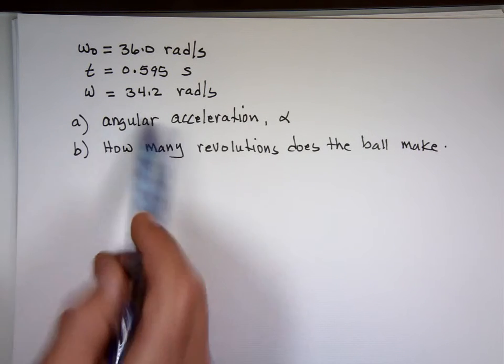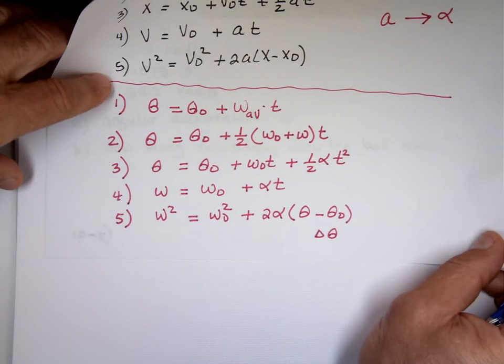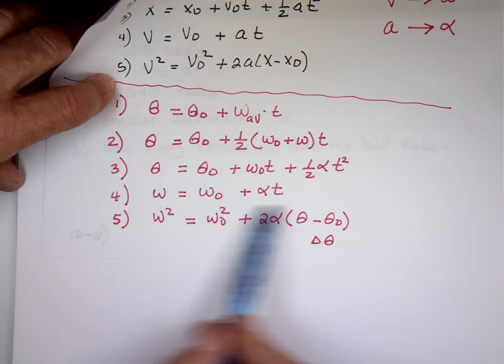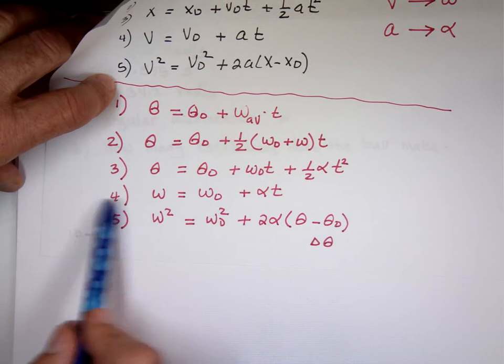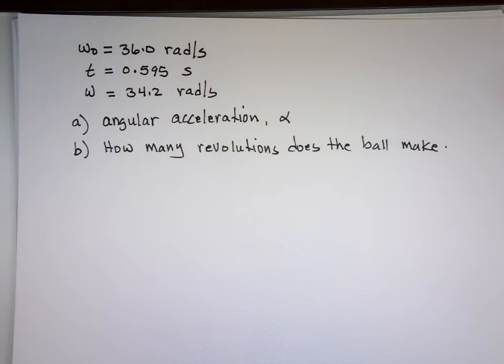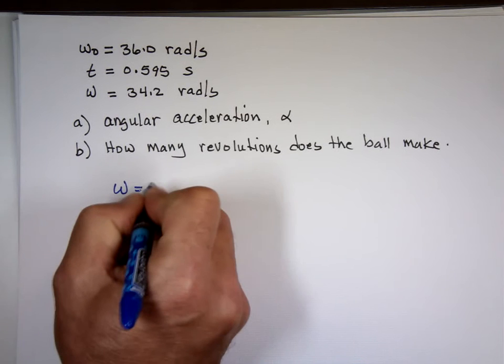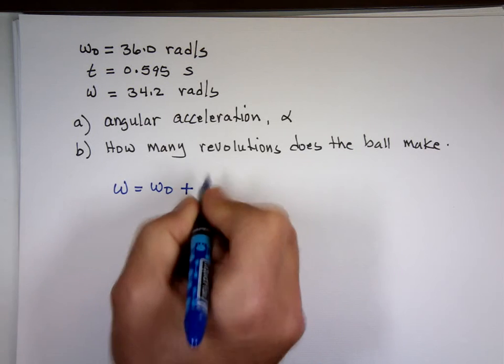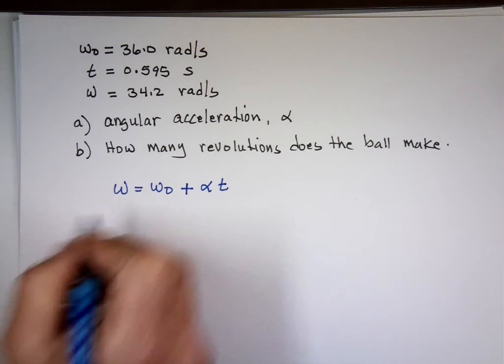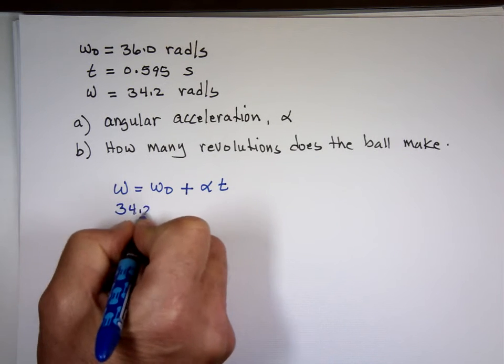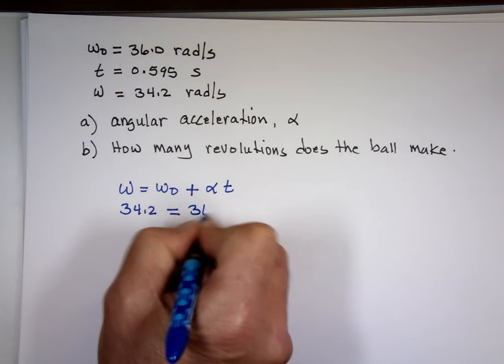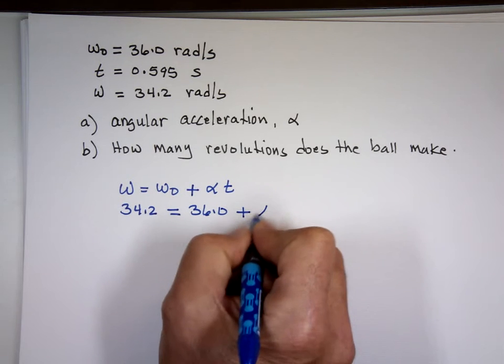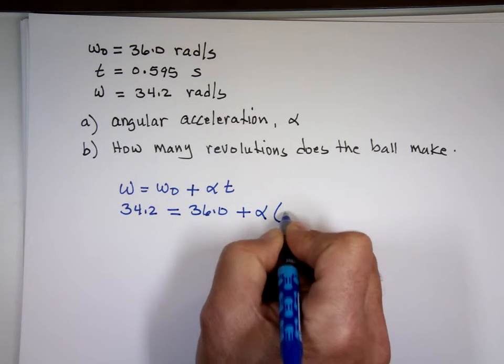w 0, w, t, and alpha. Equation number four. See it right here. It has all these four pieces in it. W equals w 0 plus alpha t. W is what? 34.2. W 0 is 36.0, plus alpha. Alpha is what? I'm looking for it. And what about the time? 0.595. How many unknowns do you have there? One.